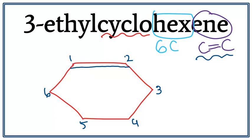Now we also have an ethyl attached to this cyclohexene and it is attached on the third carbon right here. So let's get rid of these numbers and let's attach ethyl on the third carbon.